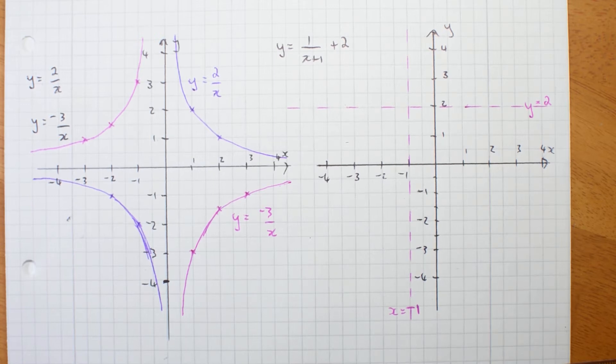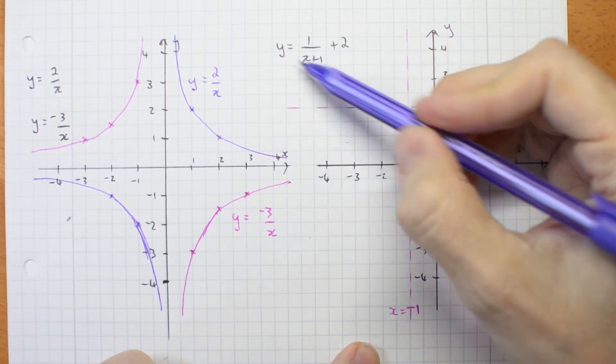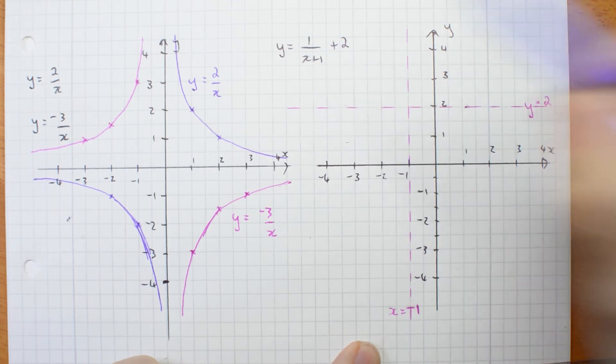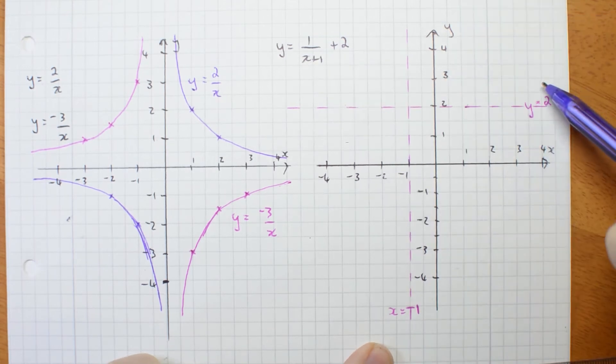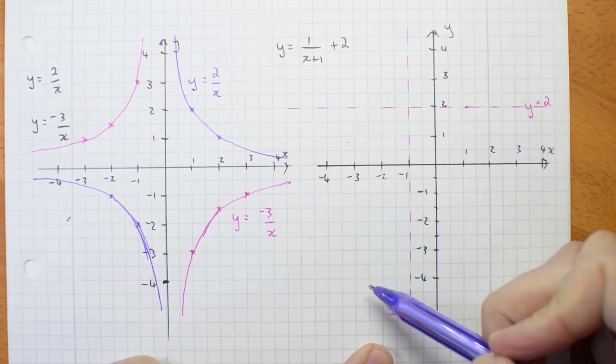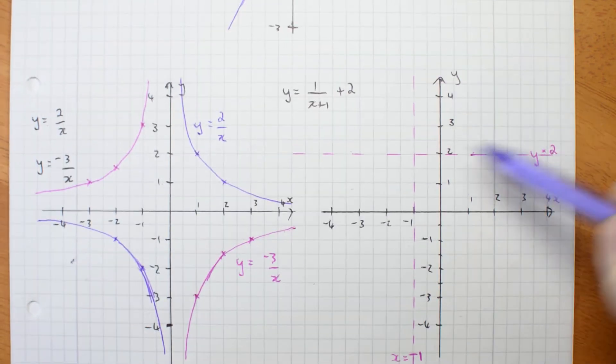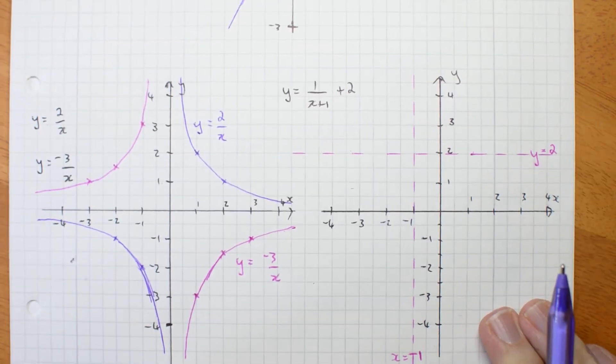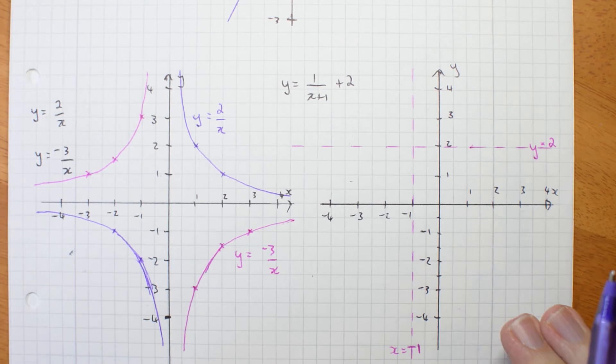Now, the curve I want to draw, it's a positive coefficient, so it's going to be up here and down here. But exactly how far up and how far down? Well, let's work that out.